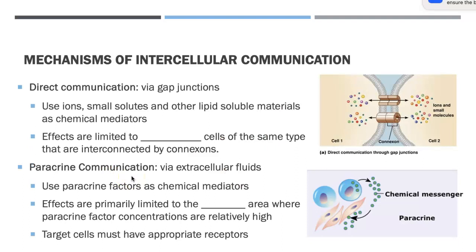Now let's talk about some of the mechanisms of intracellular communication. When we have direct communication, it's typically through our gap junctions. These can use ions, small solutes, and other lipids to go through the gap junctions and serve as a chemical mediator. The effects are limited to adjacent cells because the cells have to be next to one another to use the gap junction, and they're interconnected through the connexons.